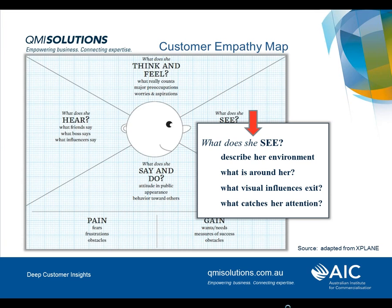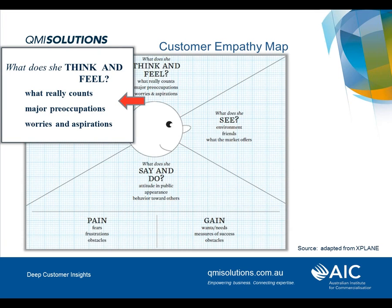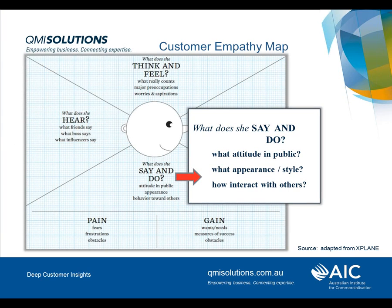Capture those sorts of things quickly on an empathy map. And then what does the person think and feel about all that? What really counts — what are their major preoccupations? Are they worried more about money, or their kids' education, or getting there safely? What are their worries, their concerns, their aspirations? Jot that down on the empathy map as well. These sorts of things start to give you an understanding of that customer. And if you can't answer the questions, you need to go and ask — you need to go and find out. If you think you know your customer, you'll soon find out when you try to do this customer empathy map whether or not you actually do.